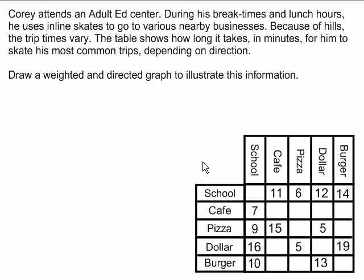On your exam, you might be asked to draw a weighted and directed graph to illustrate a situation. This video will show you how to do that. In this example, Corey is a student at an adult ed center who rollerblades to various nearby businesses. Because there are hills around his center, it can take him longer to get to a business than it does to get back, or vice versa. The table presents the school and a list of nearby businesses, giving the time in minutes to get from one to the other. Not all trips are listed, but some of the most common ones are. You're being asked to draw a weighted and directed graph to illustrate this information.